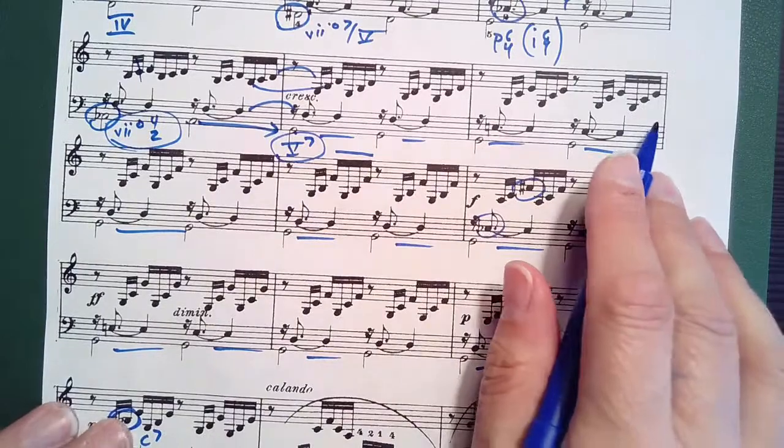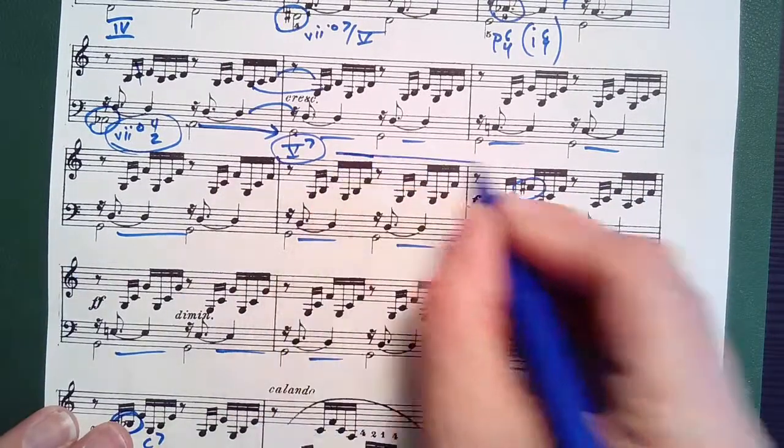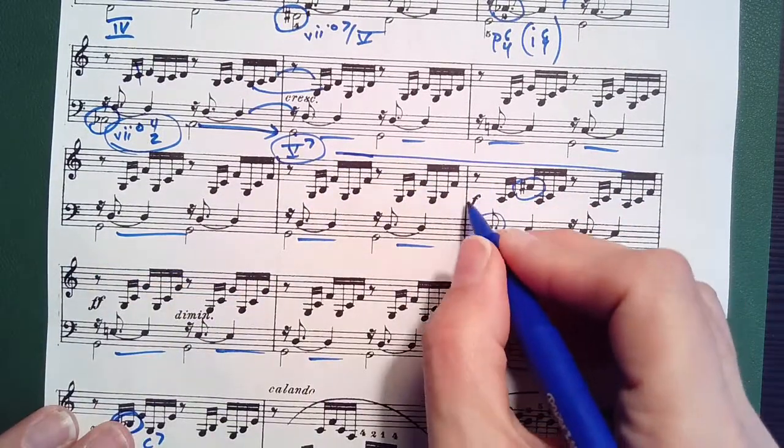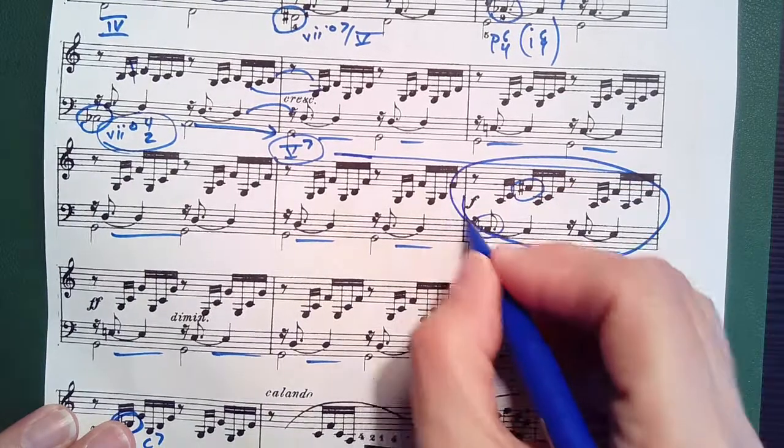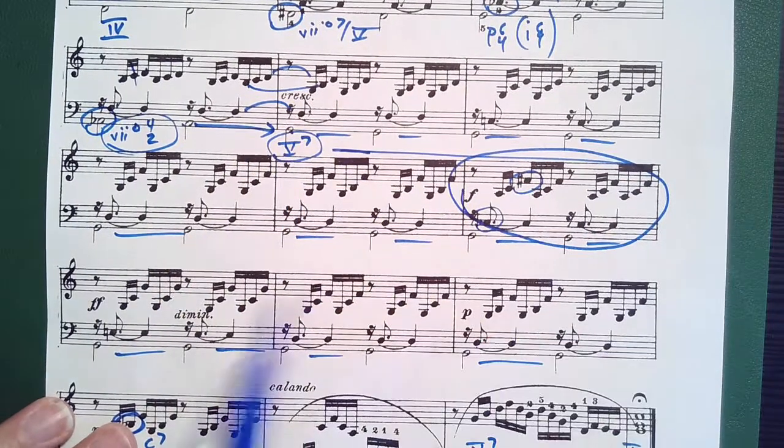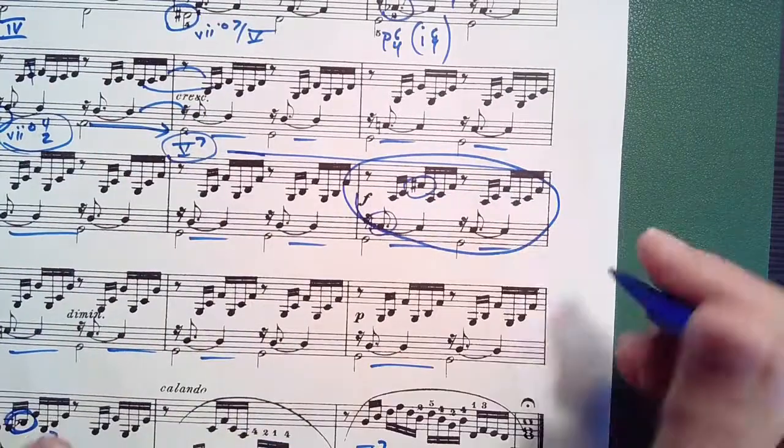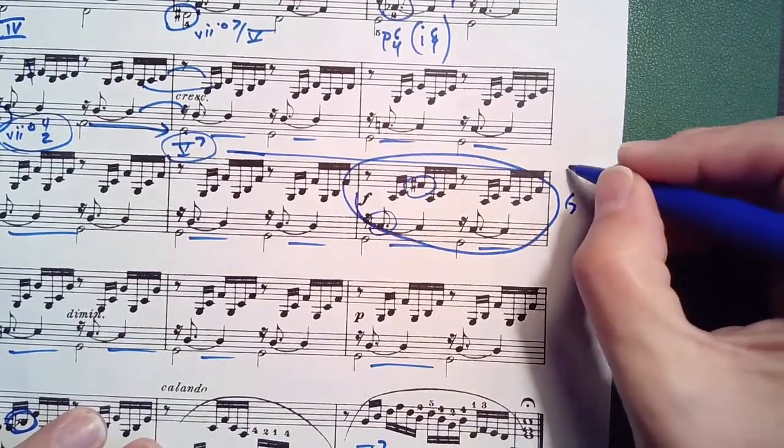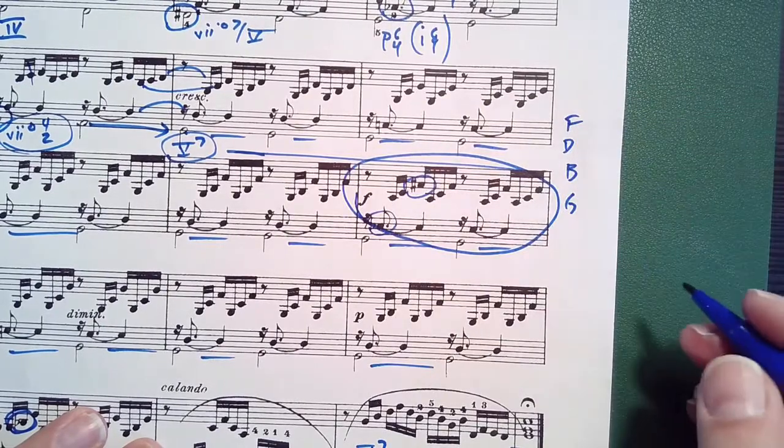Through all of this section, this could just be analyzed as five, except for this spot right here. Think about above the G chord, we could have G, B, D, F. That's our V7.